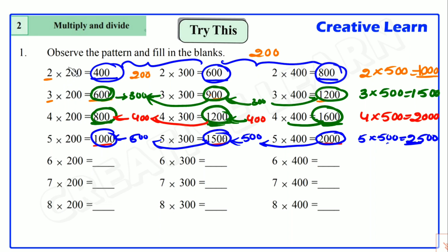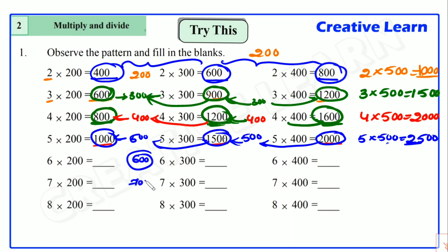So the pattern is: when we multiply with two, the difference is two hundred. When we multiply with three, the difference is three hundred. When we multiply with four, the difference is four hundred. When we multiply with five, the difference is five hundred. So if we multiply with six, the difference has to be six hundred. When we multiply with seven, the difference has to be seven hundred. Eight — eight hundred.